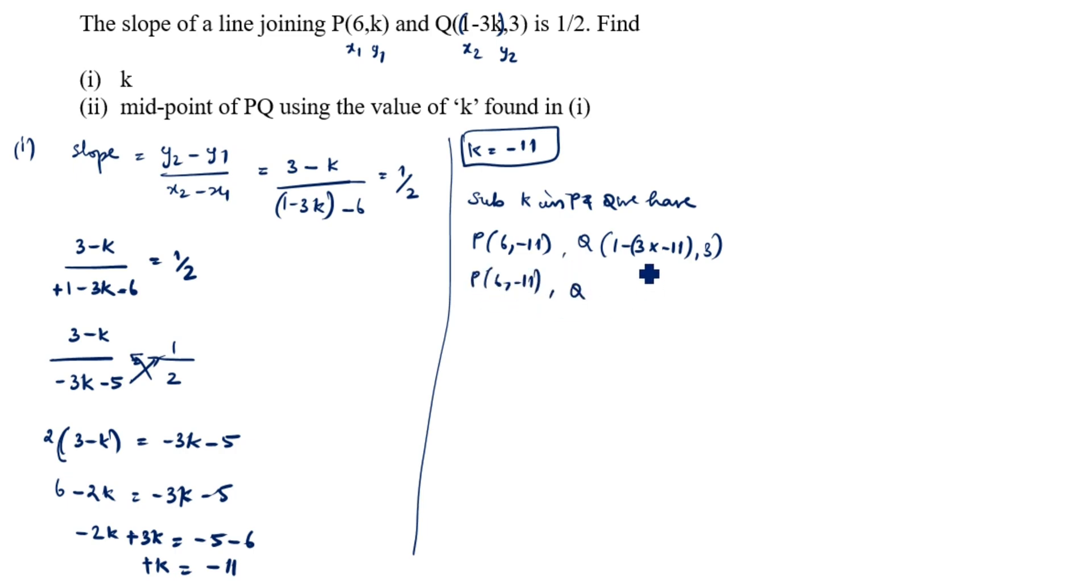Q: minus is given here. So 3 into 11 is 33, minus 33, minus of minus is plus. So 1 plus 33 is 34 comma 3. So P is (6,-11) and Q is (34,3).